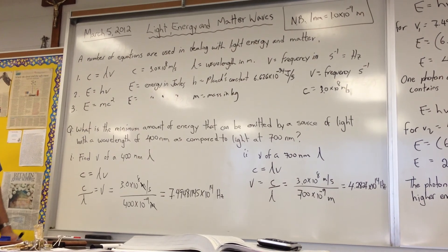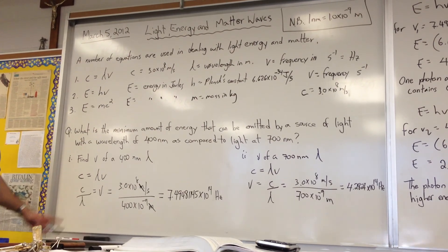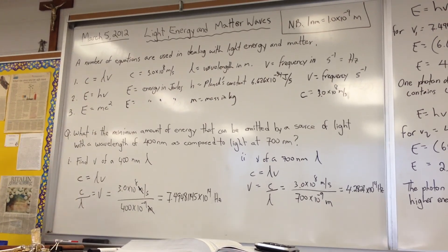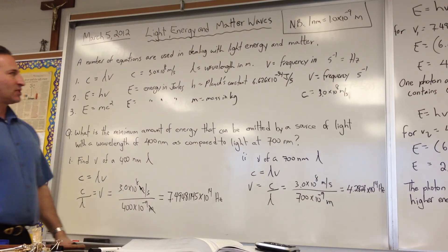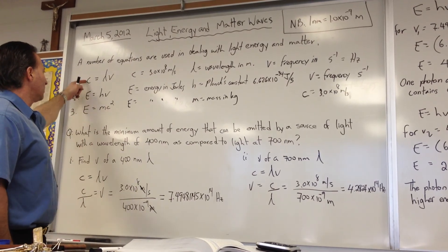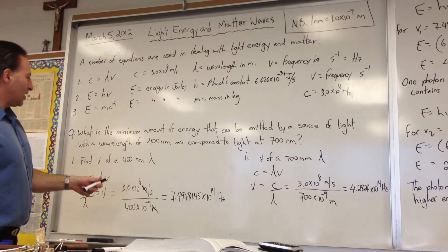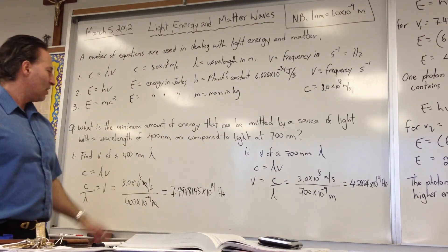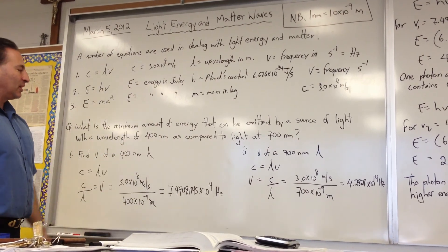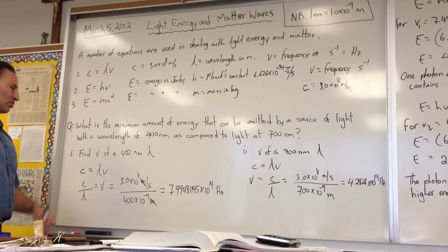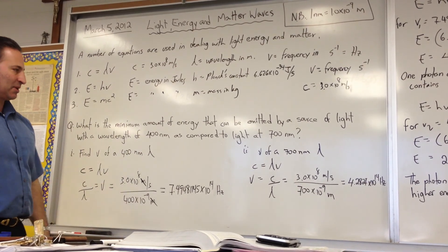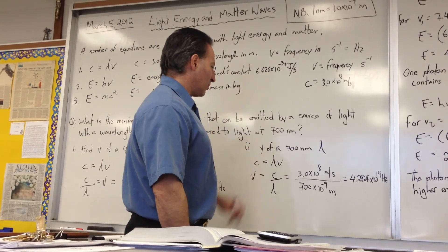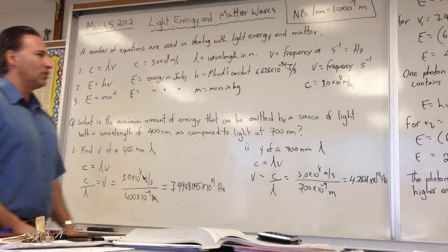Einstein's famous equation, E equals mc squared, relates the energy content of matter to the speed of light and the mass of matter. The first question I want you to look at is to familiarize yourself with the use of these two equations — we're going to calculate the energy content of a photon at 400 nanometers wavelength and 700 nanometers wavelength, and determine which photon has more energy.